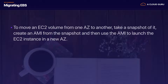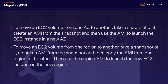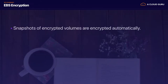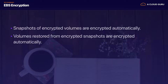To migrate an EC2 volume from one availability zone to another, take a snapshot of it, create an AMI from the snapshot, then use that AMI to launch the EC2 instance in the new availability zone. To move from one region to another, take a snapshot, create an AMI, copy the AMI from one region to another, then use the copied AMI to launch the new EC2 instance in the new region.